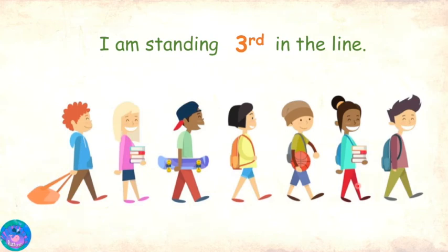Very good Zoe! We can also use ordinal numbers to point out something by telling its position. Like, I am standing third in the line. So that's me! Correct again, Sam!